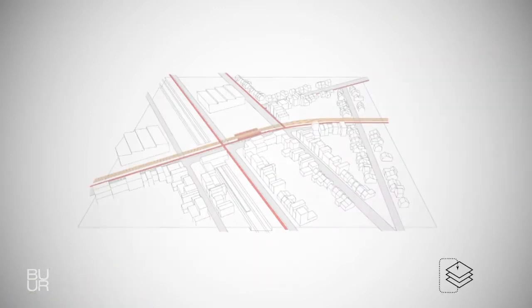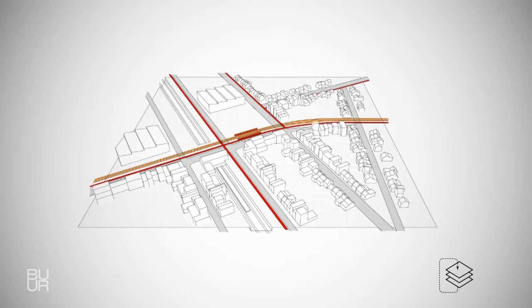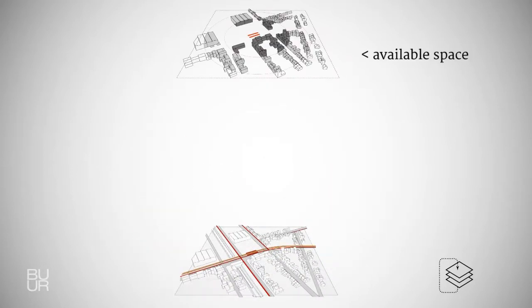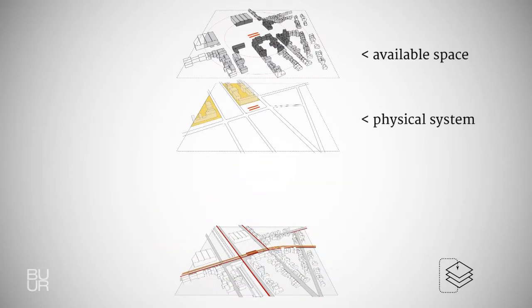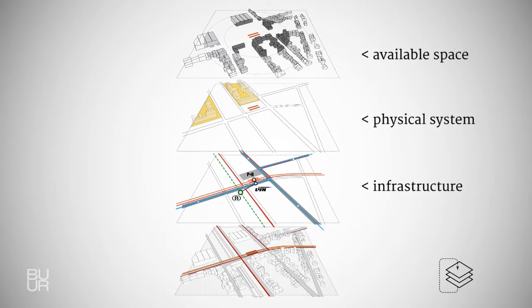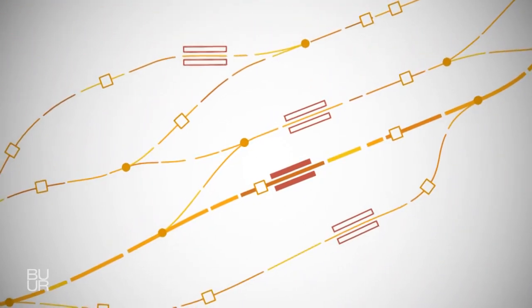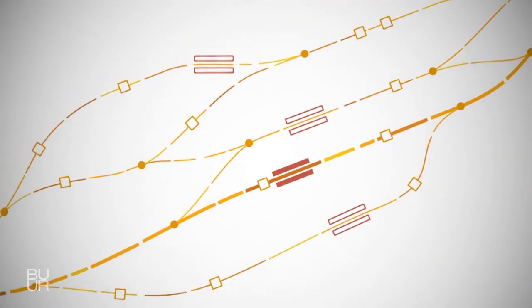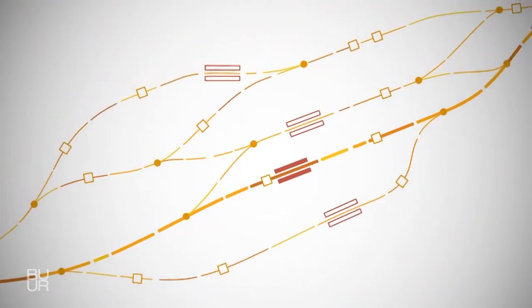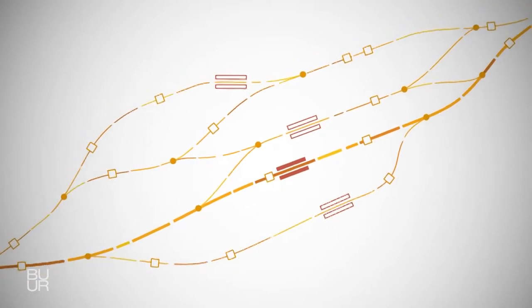The next step is a dynamic assessment of the tramline and the tram stop in terms of available space, the physical system, and the infrastructure network. Once the blocks are linked on a micro level, you can start building up a network of lines and nodes that can all be analyzed by the same criteria.